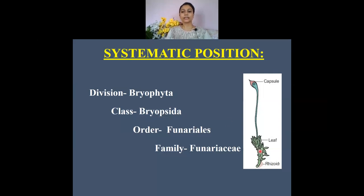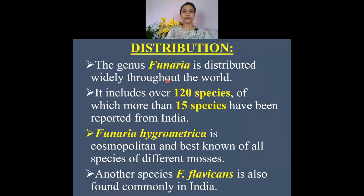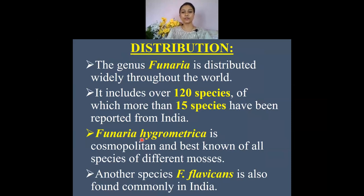They have root-like rhizoids, an axis or stem, and leaves, just like higher plants. The genus Funeria is composed of around 120 different species, widely distributed all over the world. In India, it is represented by about 15 different species, the most commonly known being Funeria hygrometrica. Another commonly known species is Funeria flavicans.